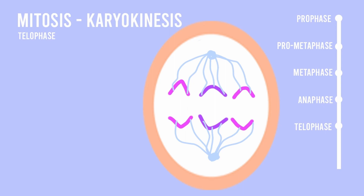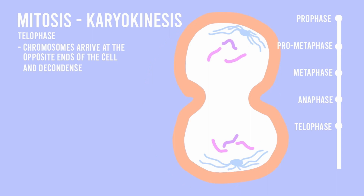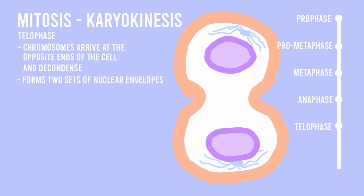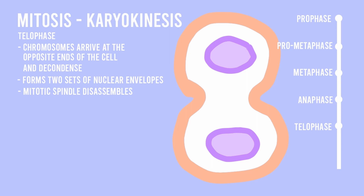Finally, during the telophase, the chromosomes arrive at the opposite poles of the elongated cell and begin to decondense. The elongated cell forms two sets of nuclear envelopes, which surround each set of chromosomes. Furthermore, the mitotic spindle disassembles into its constituent monomers, which will be used to support the structure of each daughter cell.